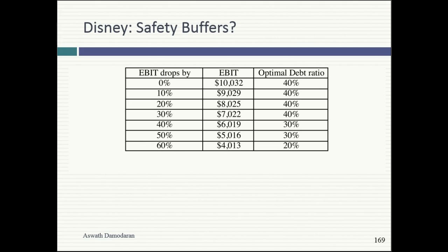Even if Disney has a bad year, they'll have no problem servicing debt. This is driven by your earnings and cash flows. This is where, with a commodity or cyclical company, you might hold back — because when you do the what-ifs and ask what happens if the cycle changes, you could quickly decide that 40% is too high and settle for 20%. That's ultimately a management decision about how much buffer to keep. Your job is to give them the cost of that buffer.